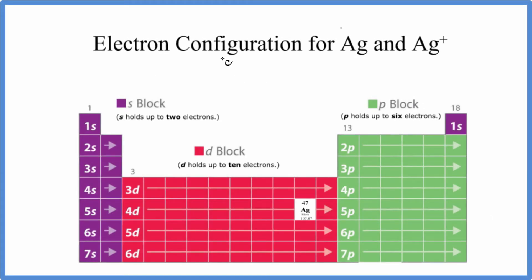In this video, we'll write the electron configuration for Ag and Ag+. This is silver and the silver ion. Silver is a bit of an exception, so we have to be careful. Let's take our time and get this right.